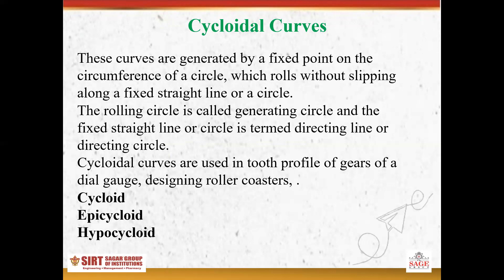That circle is known as a generating circle, and the line or circle on which it rolls is known as a directing line or directing circle. So simply, a cycloidal curve is a curve generated by the fixed point on the circumference of a circle which rolls along a straight line or rolls over another circle without slipping.